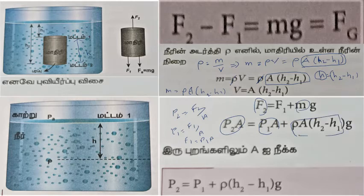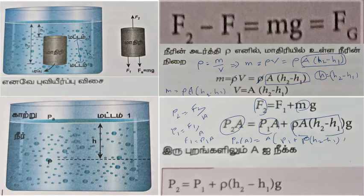If you have a problem: P2 is equal to P1 plus rho into H2 minus H1 into G. That's the answer.